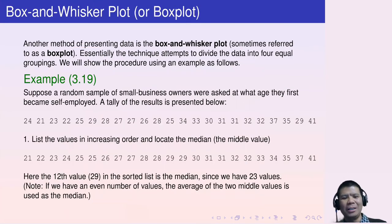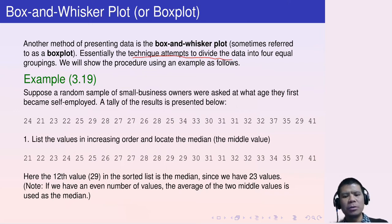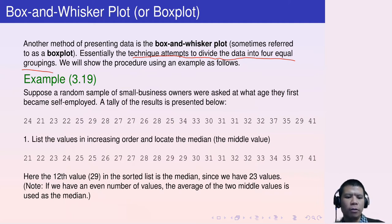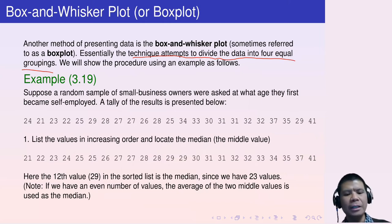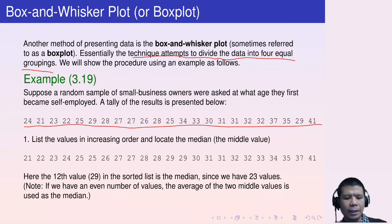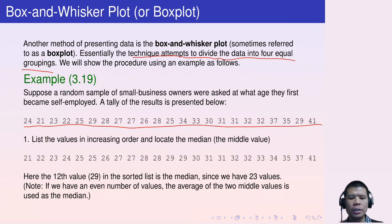Next is the box and whisker plot, or box plot. Essentially, the technique attempts to divide the data into four equal groups. Let's see how we can do so using the following example. Suppose a random sample of small business owners were asked at what age they first became self-employed. A tally of the results is presented below.